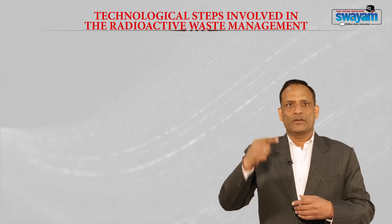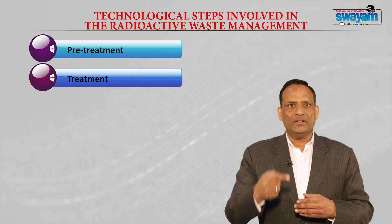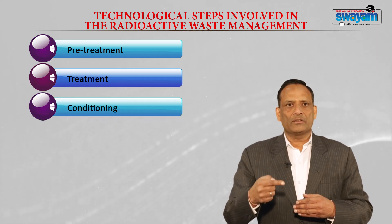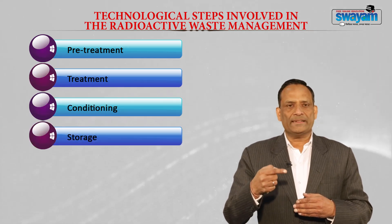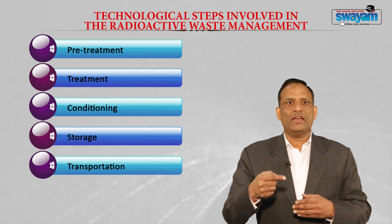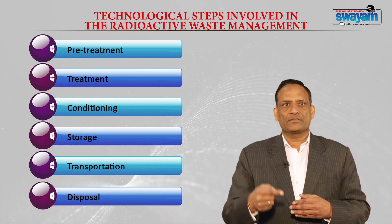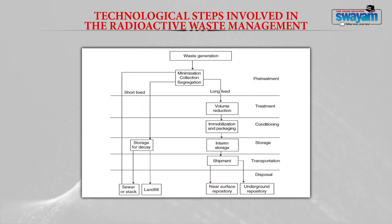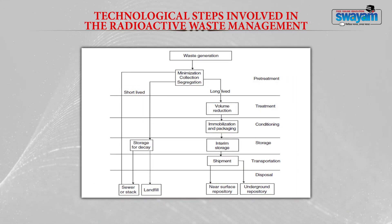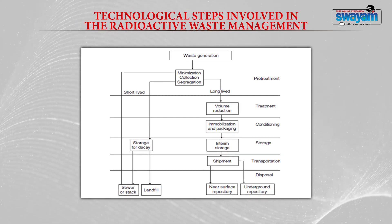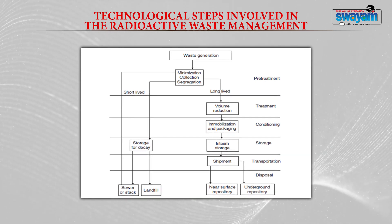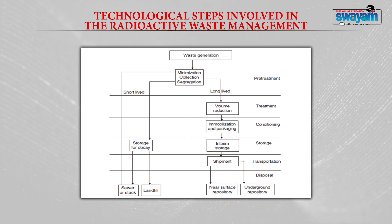The steps involved in radioactive waste management are: pre-treatment, treatment, conditioning, storage, transportation, and disposal of radioactive waste. A flow chart diagram shows the technological steps involved in radioactive waste management.